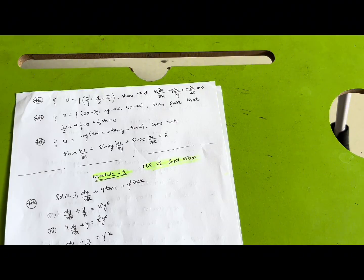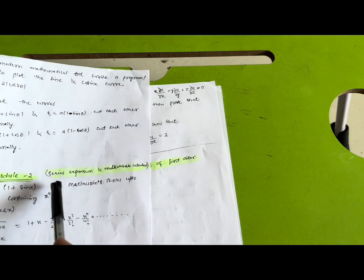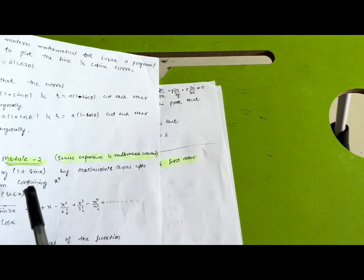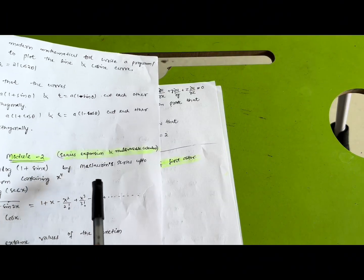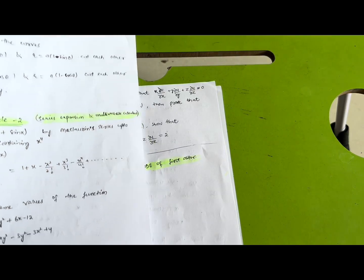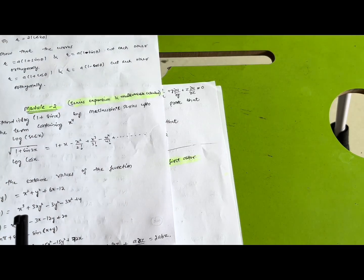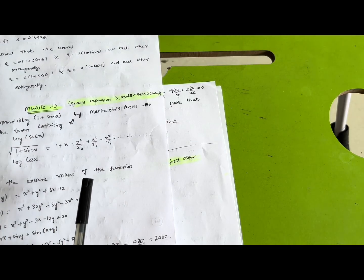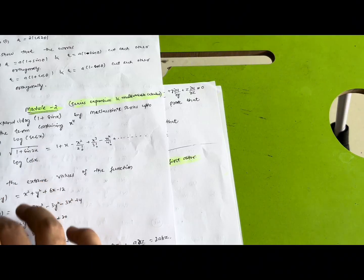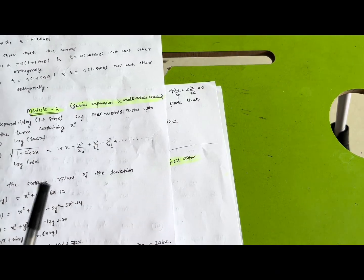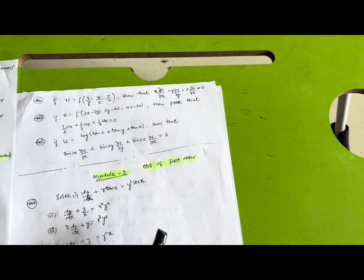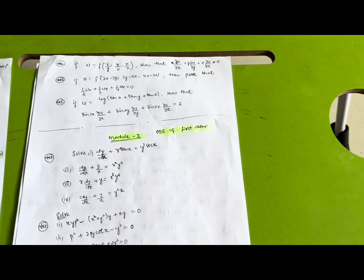For those who want to pass only, they have to go through the three passing models. Referring to two super important questions from Module 2 and Module 3 will be sufficient. They can go through the Maclaurin series, which is somehow comfortable, and also find the extreme values of the function. Average students should go through the three passing modules and take two important questions each from Module 2 and Module 3.